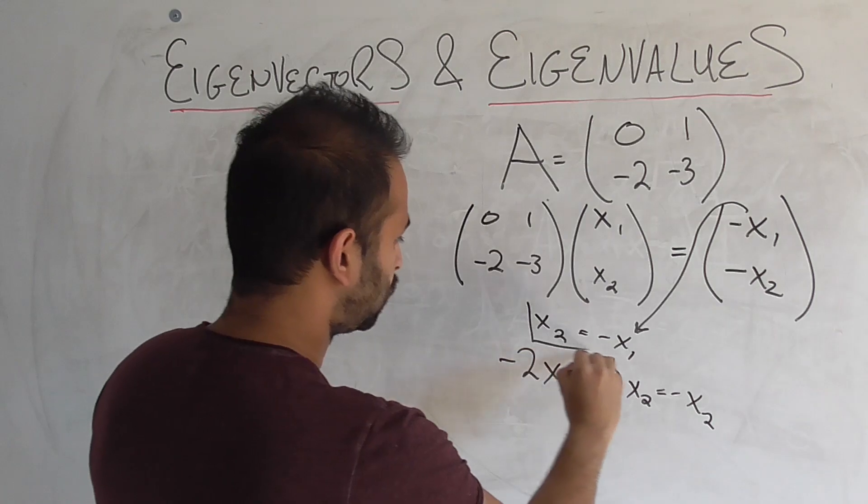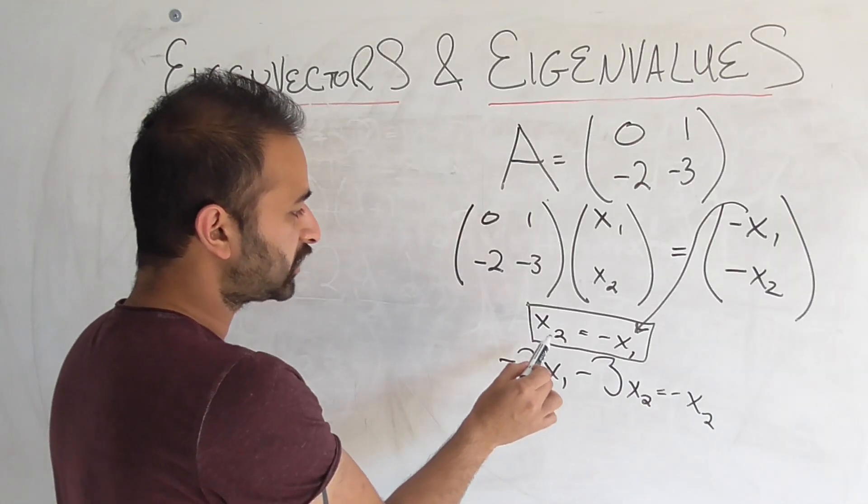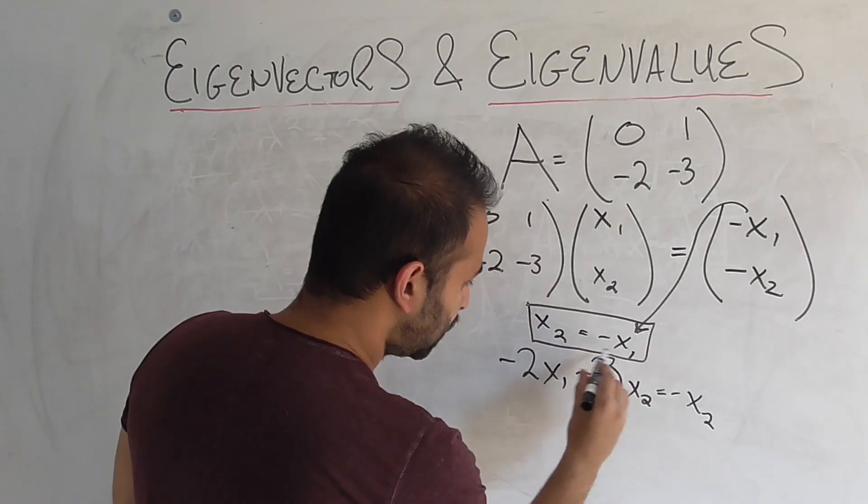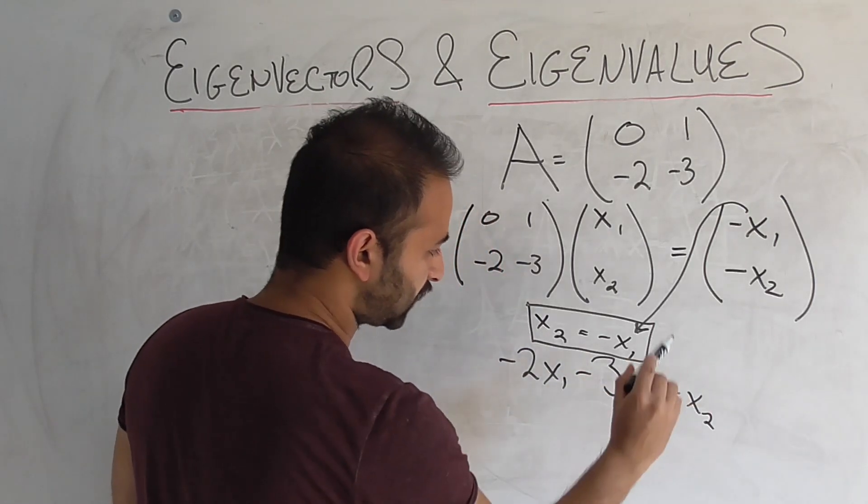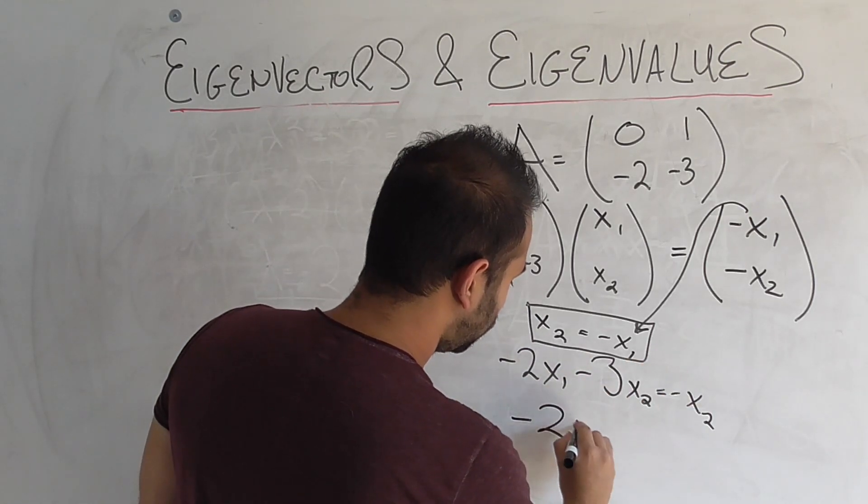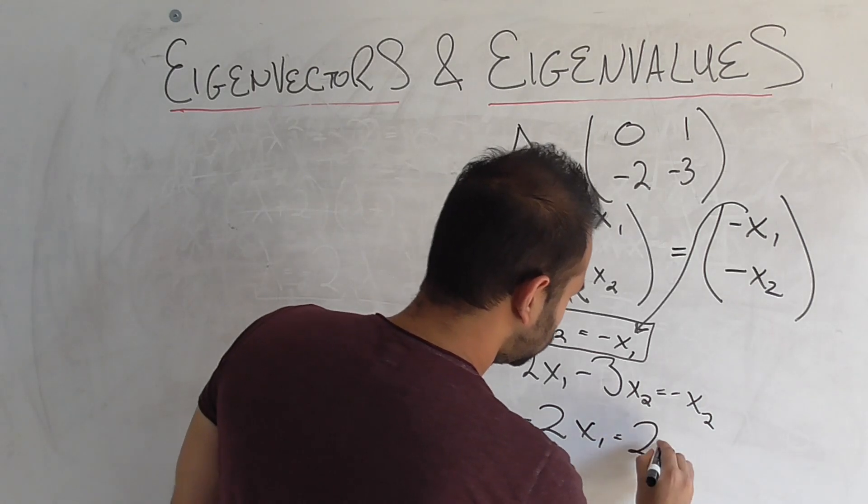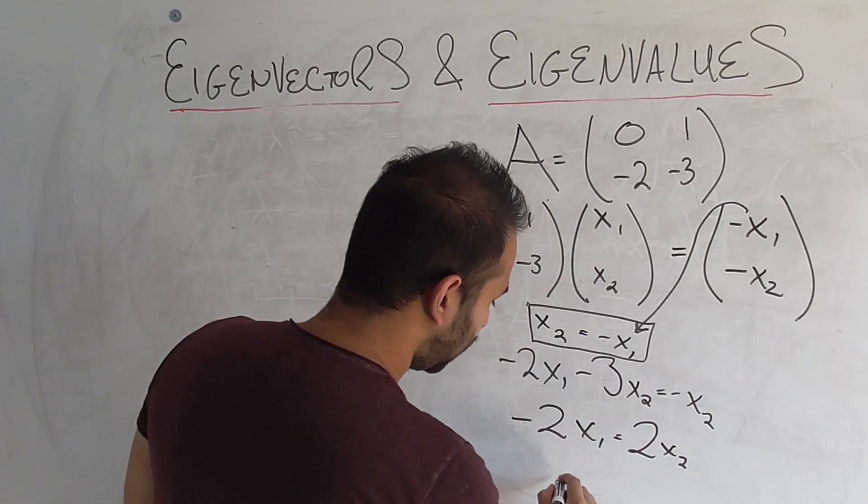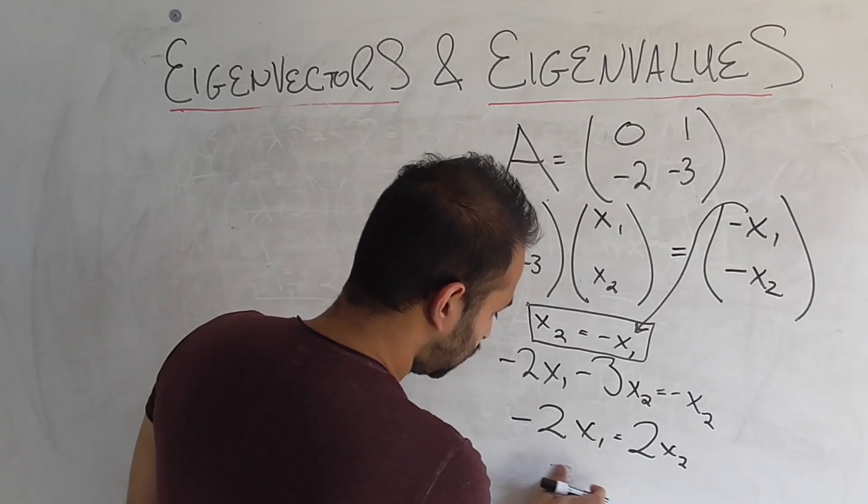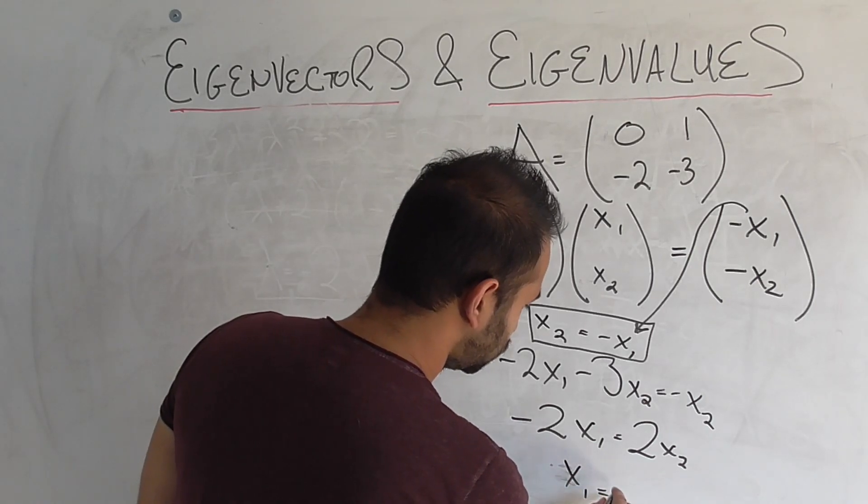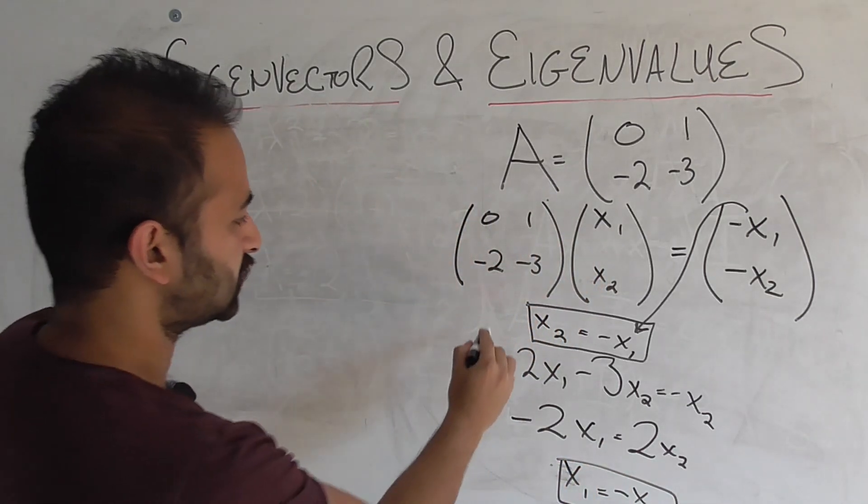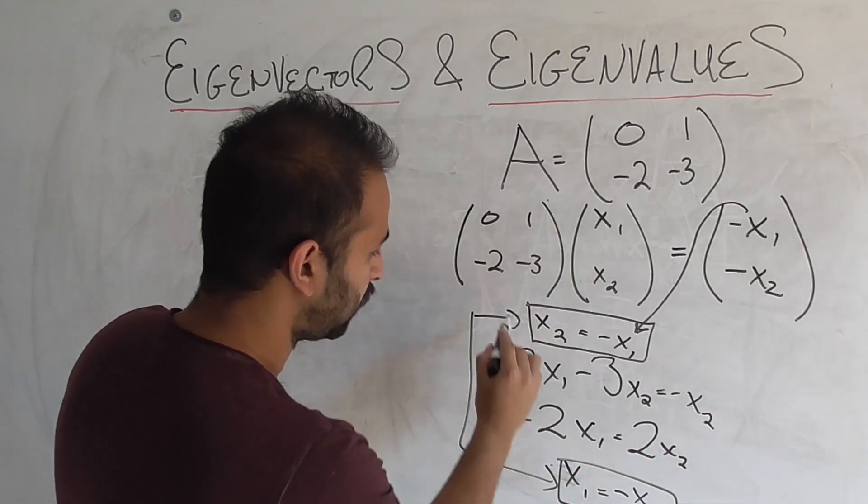Let's plug the first equation into the second one. So we have x2 equals negative x1. Let's, well, you know what, let's first move this minus 3x2 onto that side so that we get negative 2x1 equals 2x2. And then we divide by negative 2 on both sides and we get x1 equals negative x2. In fact, we didn't even need to plug in the first equation into the second one because they say the exact same thing.